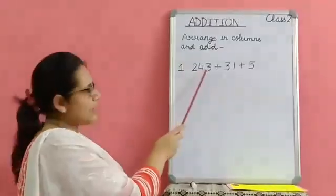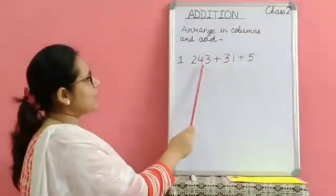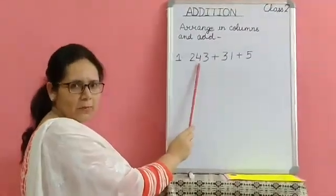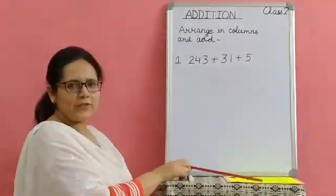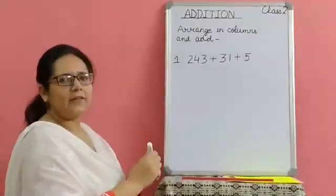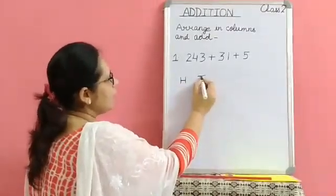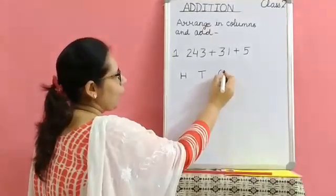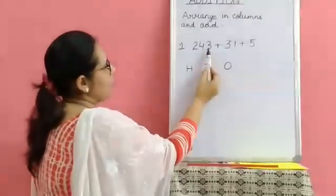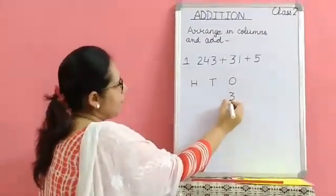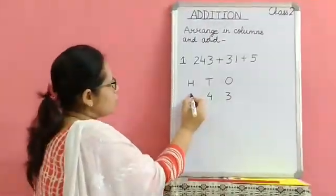The first example is a sum where I have taken three numbers. The first number is a three-digit number, the second number is a two-digit number, and the last number is a single-digit number. So let's write the columns: H for hundreds, T for tens, and O for ones. Now, the first number has three digits — three ones, four tens, and two hundreds.